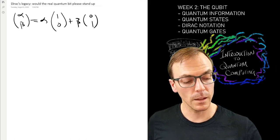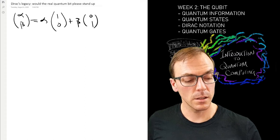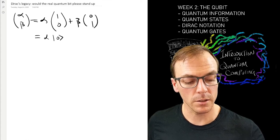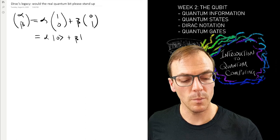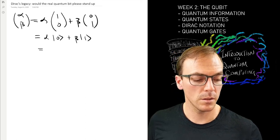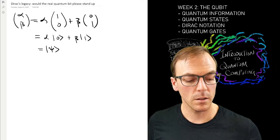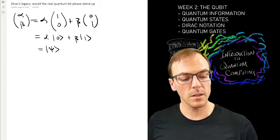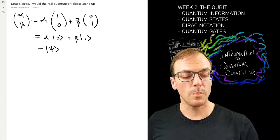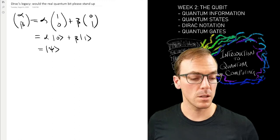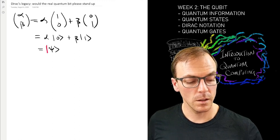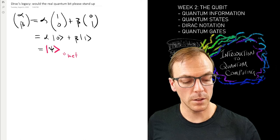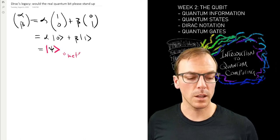Dirac introduced this notation where I replace all the vectors by this new symbol. This is the original vector. I get this new symbol with a psi inside of it, and these two basis vectors I've labeled with binary digits.